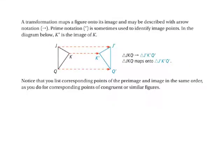A transformation maps a figure onto its image and may be described with arrow notation. Prime notation is sometimes used to identify image points. In the diagram below, K' is the image of point K. Notice that you list corresponding points of the pre-image and image in the same order as you do for corresponding points of congruent or similar figures. So in this diagram, triangle JKQ maps onto triangle J', K', Q'.